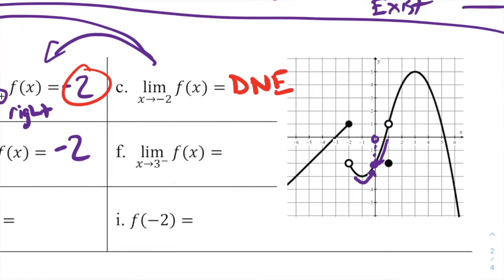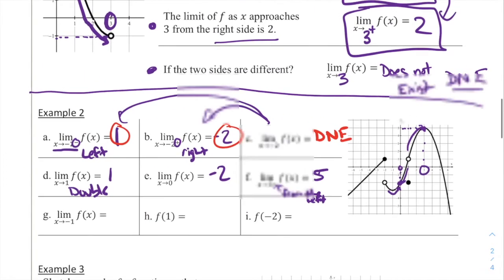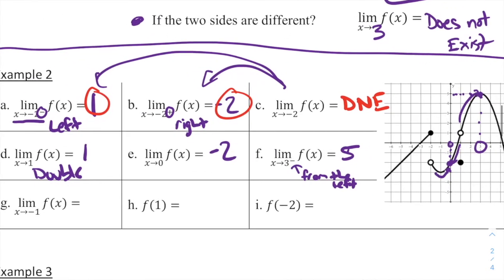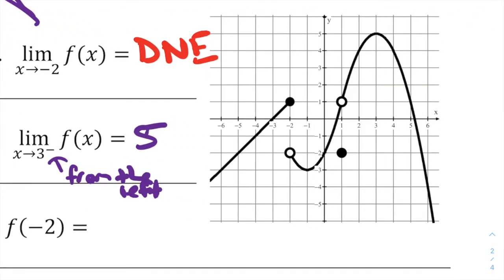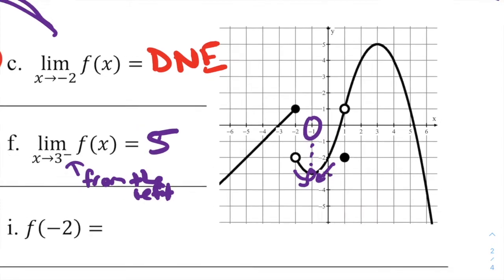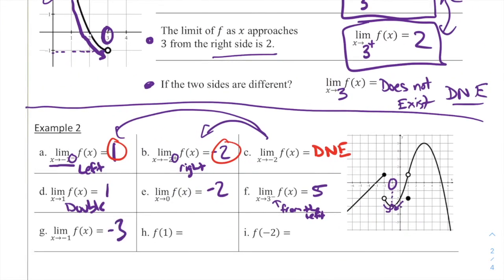For part F: the limit as x approaches 3 with the negative sign — that's from the left. Here's positive 3, and if we come from the left towards x equals 3, it looks like it's going to a point with a height of 5. So my limit as x approaches 3 from the left is 5. For part G: the limit as x approaches negative 1 of f of x — looking at x equals negative 1, from the left and from the right, it looks like it's going to a height of negative 3. So negative 3 is our limit for that one.